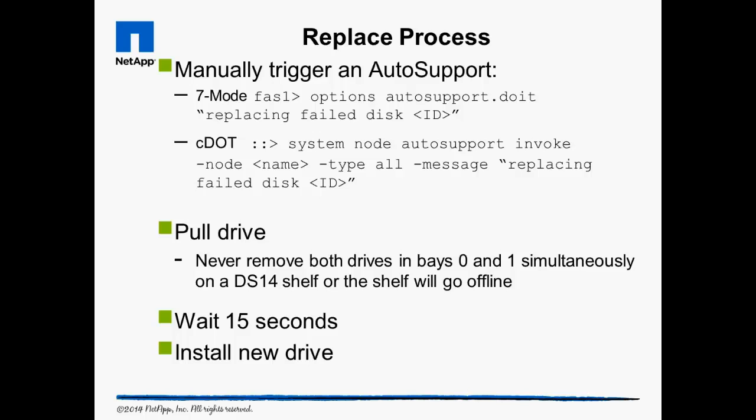Before pulling a failed drive, manually trigger an auto support to capture the current state of the system. Then double-check that you are about to remove the correct disk and not accidentally remove a healthy disk. The failed disk should have an amber LED, but sometimes a defective LED may fail to turn on. Once you have verified the physical location of the drive you want to replace, pull the drive and give the system 15 seconds to register the removal before installing the new drive.